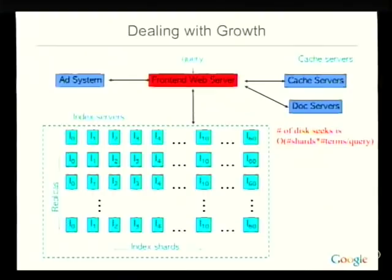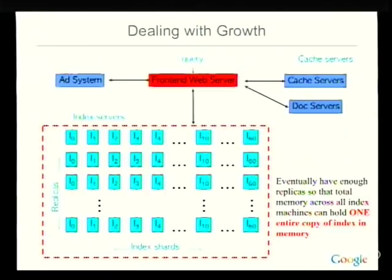As we added more and more machines and worked on index compression, we eventually realized that if you look at all those machines serving the index, you could actually hold one copy of the index in memory across all of them. So in 2001, that's actually what we did — we implemented a completely in-memory index system, and we've had that pretty much ever since for all of our index servers.